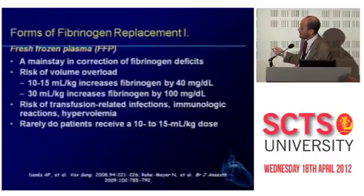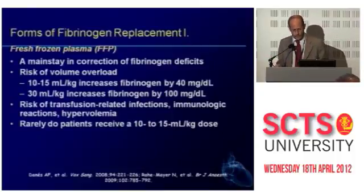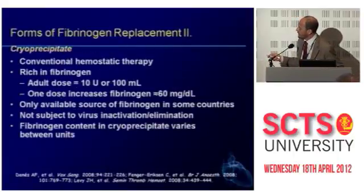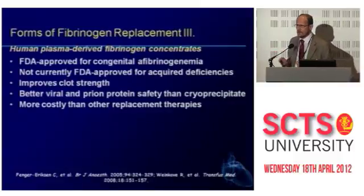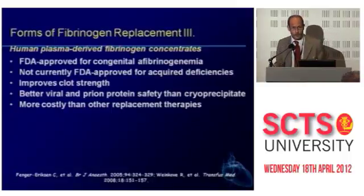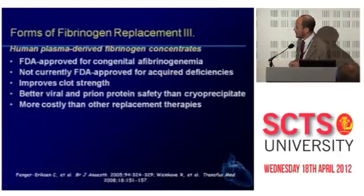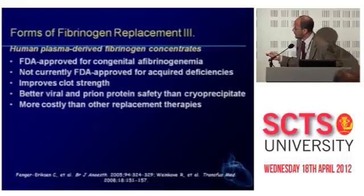We can find fibrinogen in fresh frozen plasma, but we need a lot — probably around two liters to correct an acquired fibrinogen deficiency. We have fibrinogen in cryoprecipitate, which contains much more fibrinogen. And of course we have fibrinogen concentrates. There are countries where fibrinogen is approved for acquired bleeding — Germany, Austria, Central Europe — and others like the UK where it is an off-label indication. If you are lacking fibrinogen, the most reasonable thing is to provide fibrinogen directly, though cryoprecipitate is also a possibility.